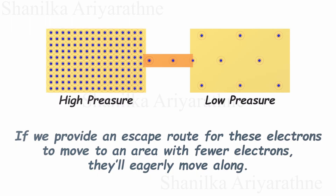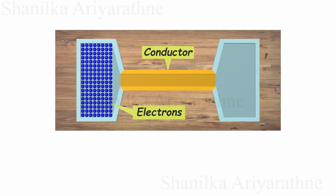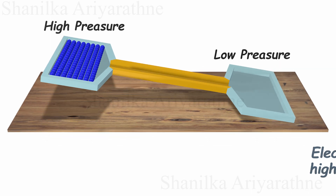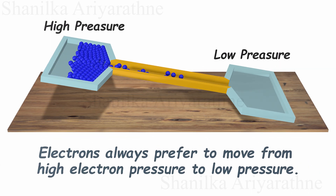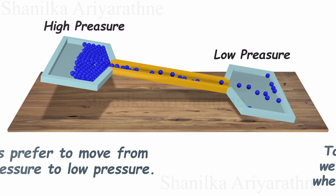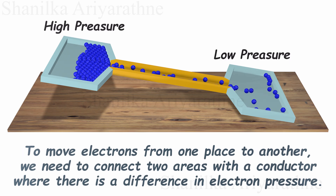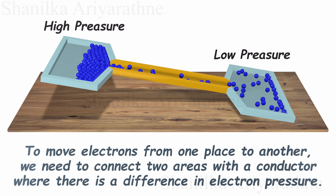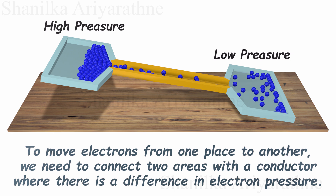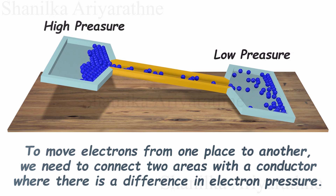It's like rolling balls from high ground to low ground. Electrons always prefer to move from high electron pressure to low pressure. So to move electrons from one place to another, we need to connect two areas with a conductor where there is a difference in electron pressure.